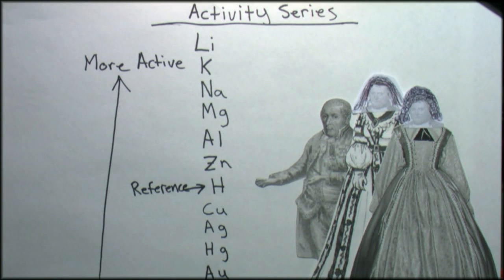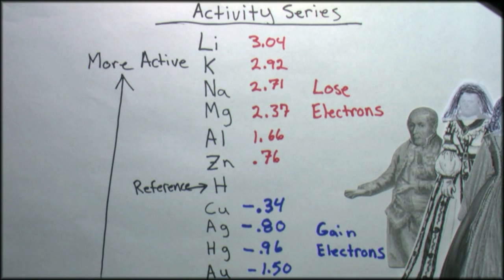This is a partial list of the activity series of metals. Lithium being the most active and gold being the least. The more active a metal the more likely it will lose electrons and oxidize. To the right you can see the standard oxidation potential in volts.